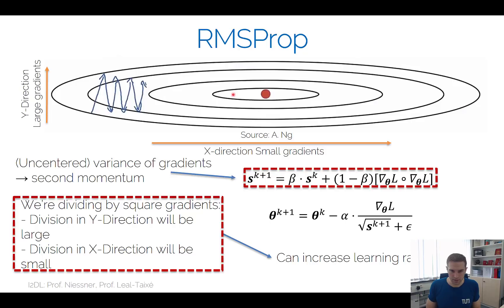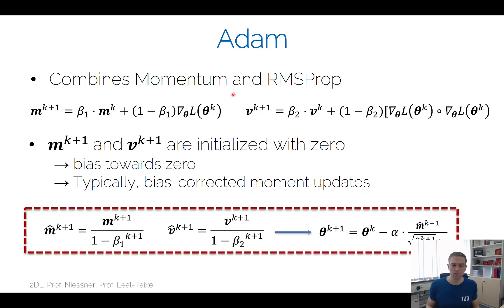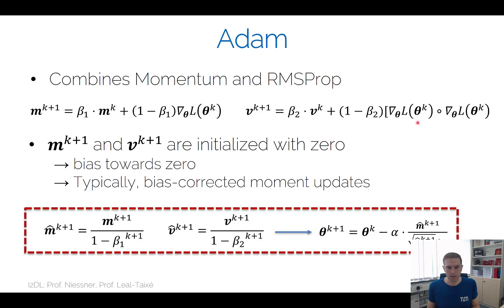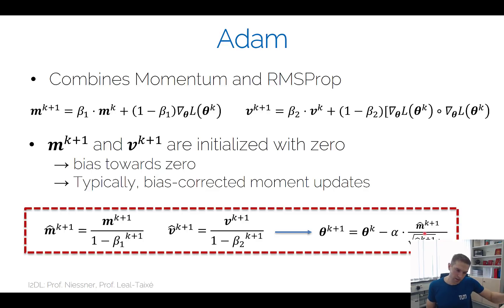Adam combines both ideas: first momentum and second momentum. We compute the mean of the gradients — essentially the velocity — as a linear weighting between the current and existing gradients. We also compute v, the variance — the exponentially weighted mean of the squared gradient components. After bias correction, we take the velocity and divide by the variance: accelerating in directions where gradients consistently point, and downscaling where the gradient has high variance.